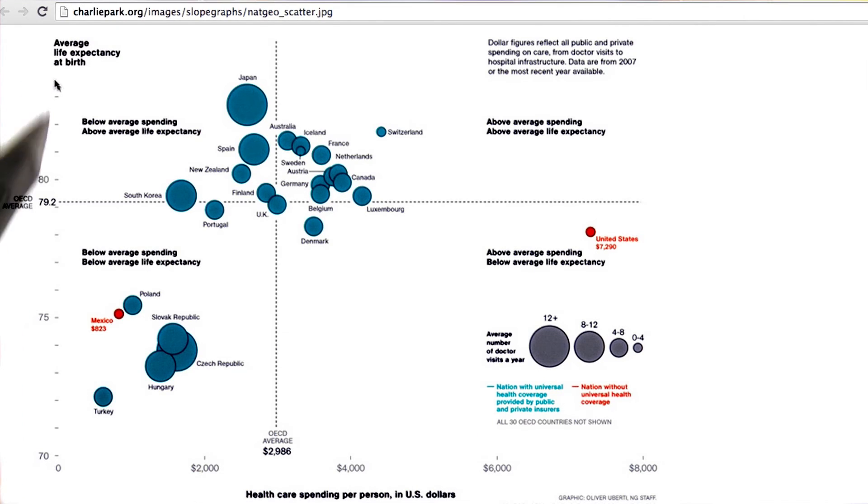Average life expectancy at birth and spending per person are both quantitative data types, just like in the graph we saw before. And whether or not a country has health insurance is really just a nominal data type. It's really a yes or no question, so that's two categories.